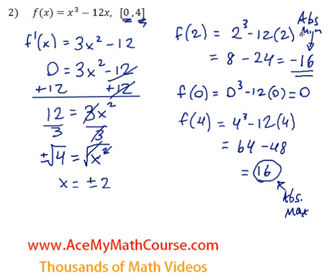So we know that the absolute minimum is f of 2, which is negative 16. This occurs at x equals 2.